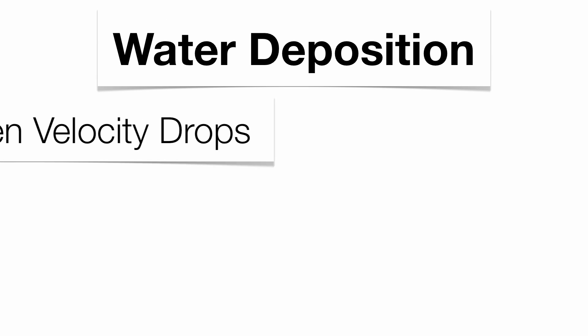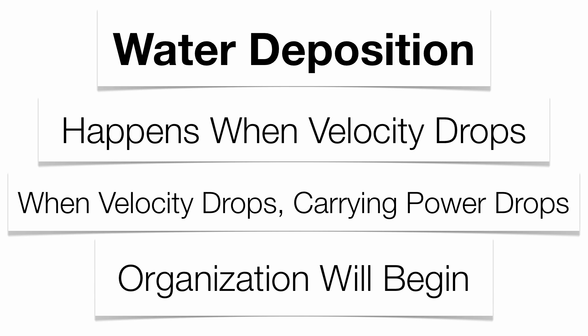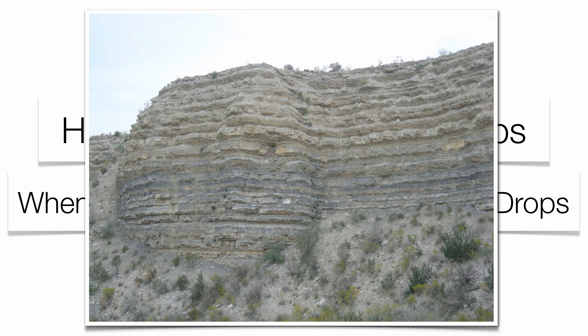Water deposition, on the other hand, is going to be solely organized. It's all based upon the fact that your carrying power and velocity are going to drop. So when your velocity drops and your carrying power drops, you end up getting deposition, and that's when organization of your sediments will begin. You can see the horizontal layers of sediment in that sedimentary rock — that's somewhat organized.